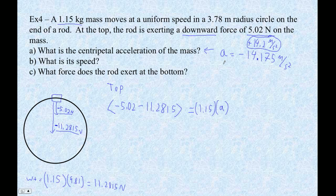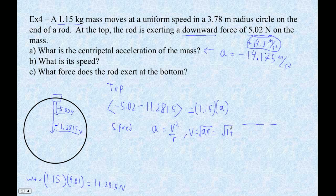Then we can figure out the speed. We use the relationship a equals v squared over r, so v equals the square root of a times r. That's going to be the square root of 14.175 times our radius, which is 3.78.